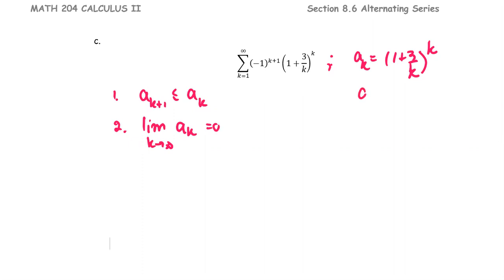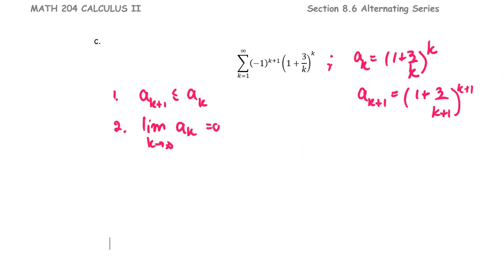For the ak term, we can see ak plus 1 is in the form of 1 plus 3 over k plus 1, raised to the power k plus 1. This form is not convenient to compare the ak plus 1 term and the ak term, so we just go ahead and look at the limit of ak.